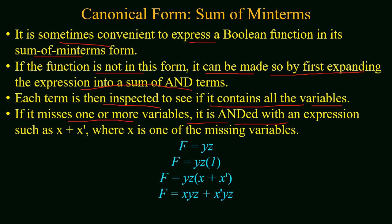For example, if a function consists of 3 variables x, y, and z, and a given term consists of only 2 variables y and z with the third variable missing, the missing term is introduced using the boolean postulate which says y·1 = y, and this 1 can be replaced with (x + x'). So the missing variable x will be introduced.